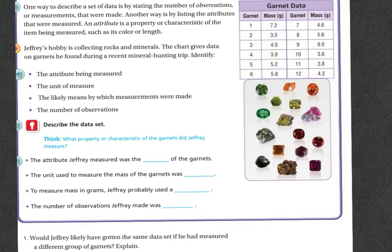So one garnet, the mass is the weight, is 7.2. Seven garnets, the mass is 4.6. Twelve, it's 4.3. So the attribute Jeffrey measured was the blank of the garnets. And that's the mass, because there's the mass, right? The unit used to measure the mass of garnets was, and if you look right next to here, they have the G for grams.